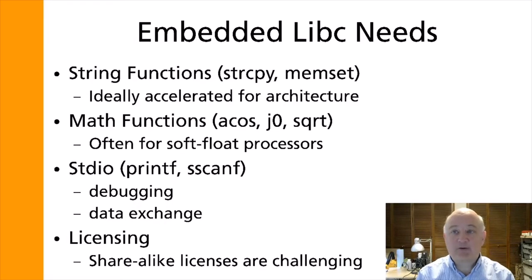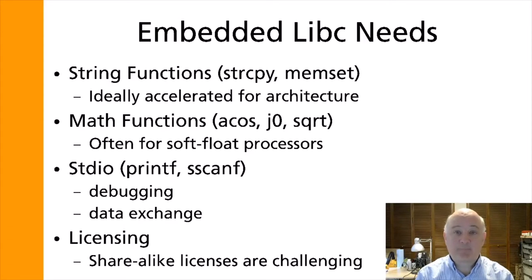Embedded systems generally make modest demands on the C library. The most commonly used functions are string and memory APIs — things like strcpy, memmove, and the like. Applications doing computation may need some math functions like square root, sine, or the occasional Bessel function. Standard I/O will often only be used during debugging to send output to a serial console, but applications may also use these functions to handle JSON, YAML, or other text interchange formats, and so strict standards conformance can be critical.